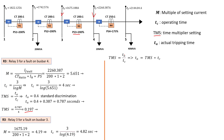Since we already determined TMS for relay 3 from the fault on bus bar 4, we use that same TMS value to calculate TA for relay 3 on bus bar 3. That gives a time of 0.95 seconds, which is the actual tripping time for relay 3 for a fault on bus bar 3 — slightly under 1 second. We have now finished relay 3 for faults on both bus bar 3 and bus bar 4, and we move on to relay 2.